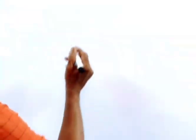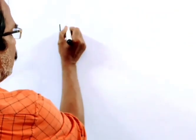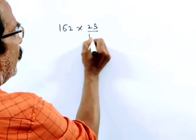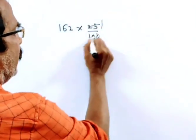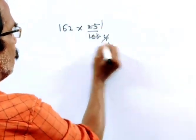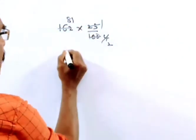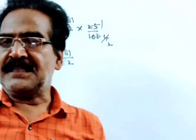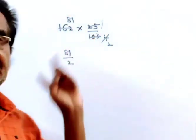Friends, here the price of X has fallen by 25%. What is 25% of 162 rupees? 162 into 25 by 100, 25 4s to 2s to 81s. So, 25% of 162 rupees is 81 by 2.